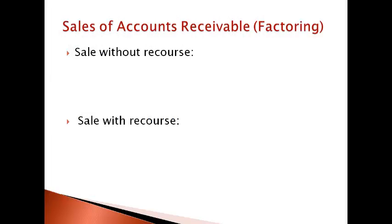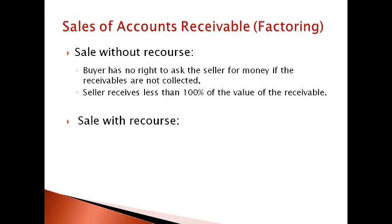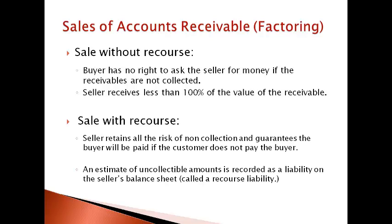Accounts receivable can be sold to others just like any other asset. Accounts receivables are generally sold by companies who need cash sooner than their customers will pay or who do not want to assume the risk of non-collectibles. There are two ways to sell accounts receivable: without recourse and with recourse. A sale without recourse removes all liability from the seller and the buyer assumes all responsibility for collecting the accounts receivable. The seller will receive less than 100% of the amount owed from customers because they are passing on the risk of collection. A sale with recourse means that the seller guarantees that the buyer will collect the receivable and the seller retains a liability for the amount that is not expected to be collected. A seller will receive more from the sale when they retain the liability for bad debt.